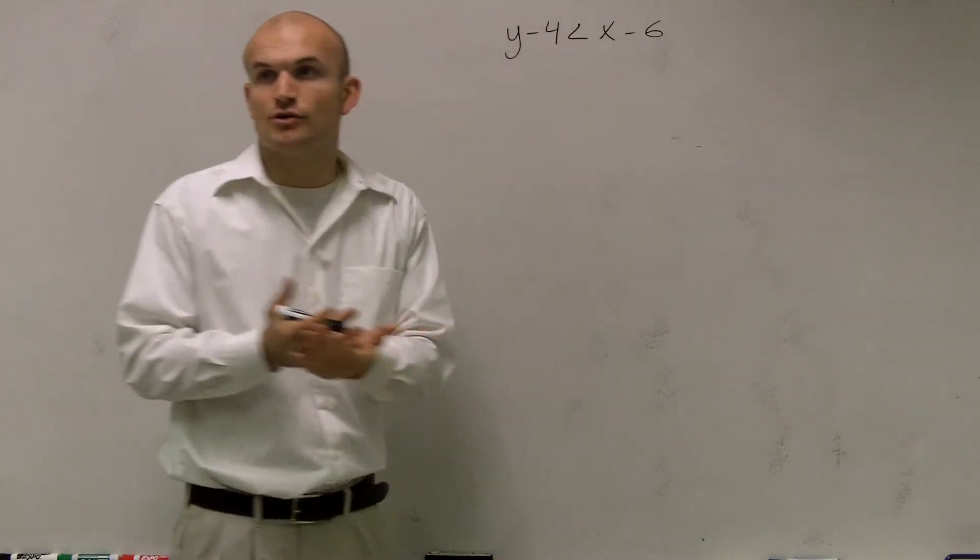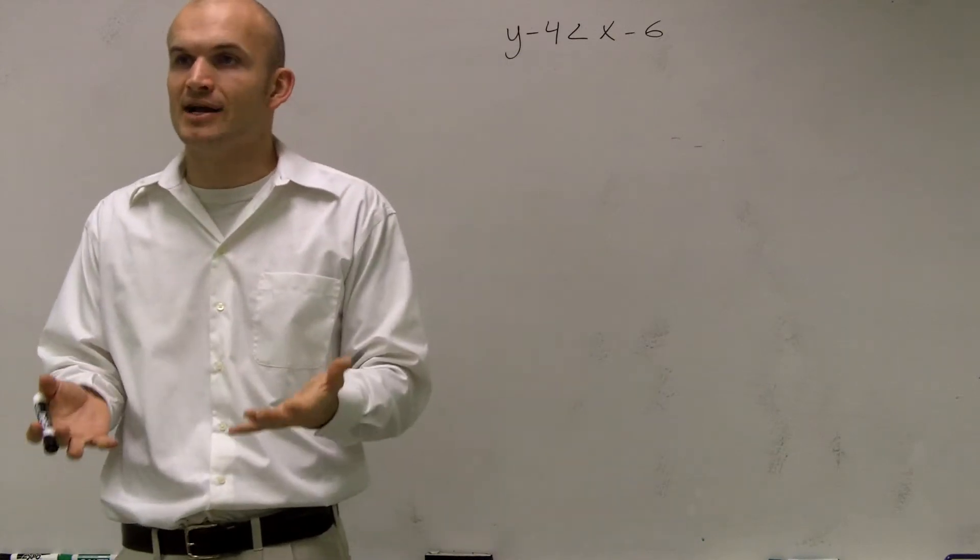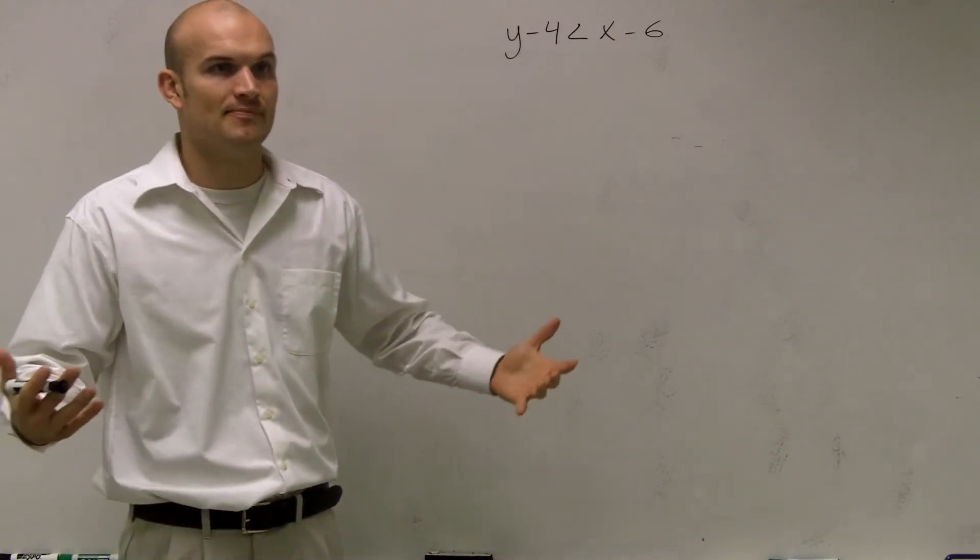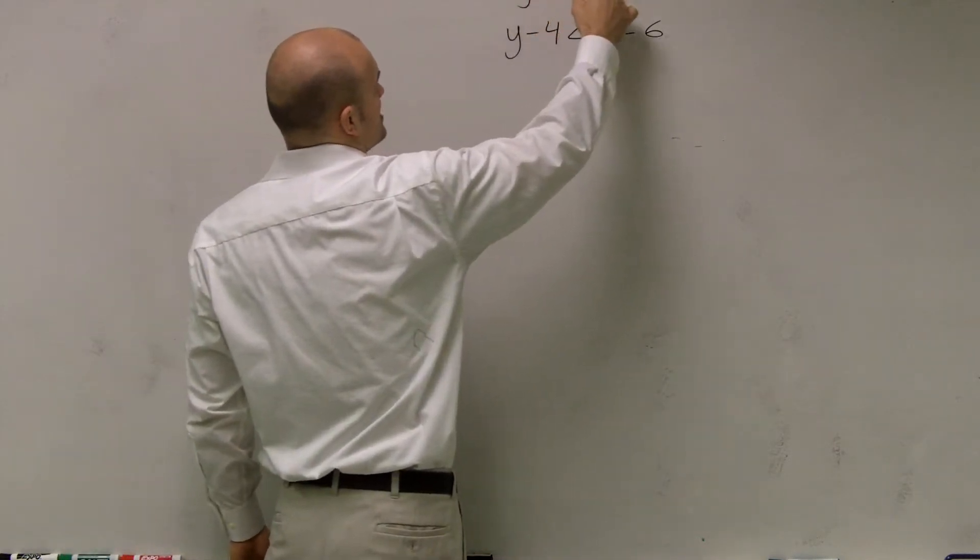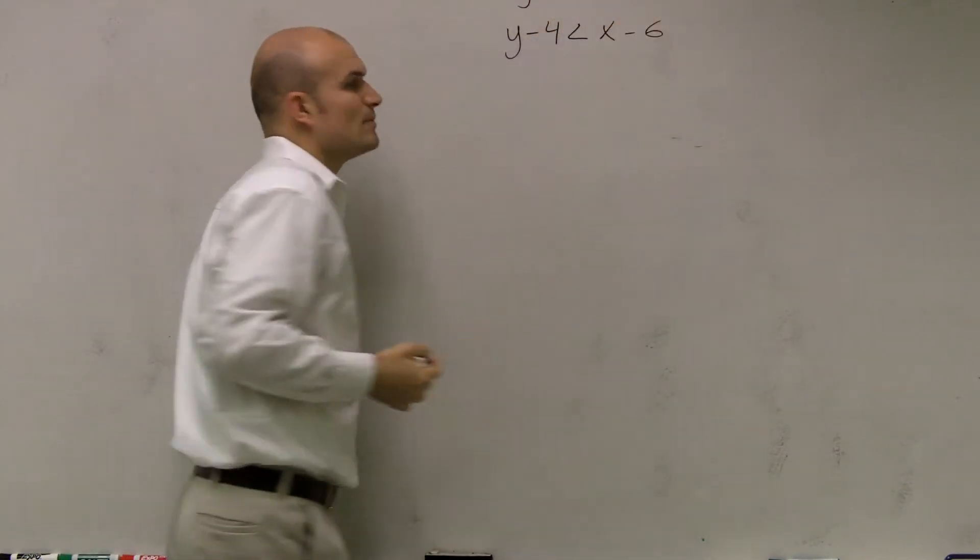So remember guys, all we need to do is when we have a number that's on the same side of y, we just need to get rid of it, right? So remember, we want it in our form of y equals mx plus b, because the reason we have it in that form, our y is by itself.